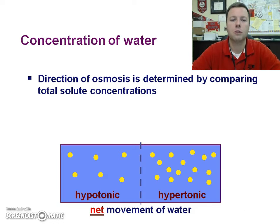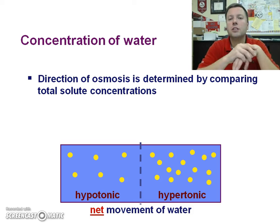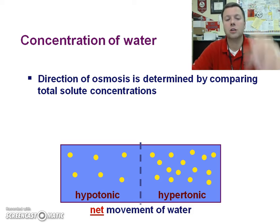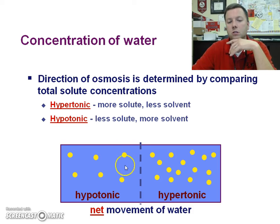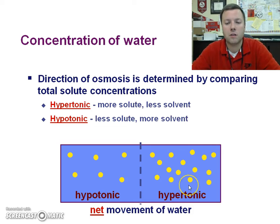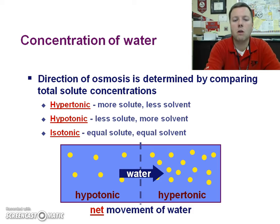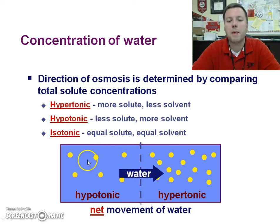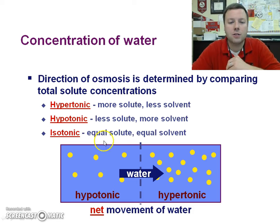Let's talk about the concentration of water one more time. You can actually predict the direction of osmosis by determining solute concentrations. On the left, this is hypotonic — meaning less solute and more solvent, so more water. On the right, there's more solute but less solvent. Water goes from high to low concentration, so it should move from left to right. They stop moving whenever the two solutions are isotonic to one another — isotonic meaning equal.